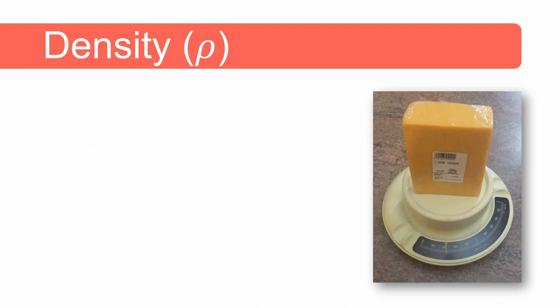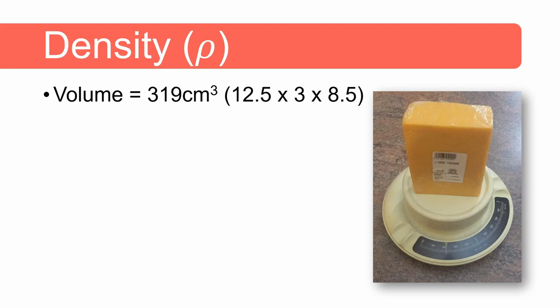Let's consider this block of cheese on the scale. Its dimensions are 12.5 centimeters by 3 centimeters by 8.5 centimeters. This gives it a volume of 319 cubic centimeters.